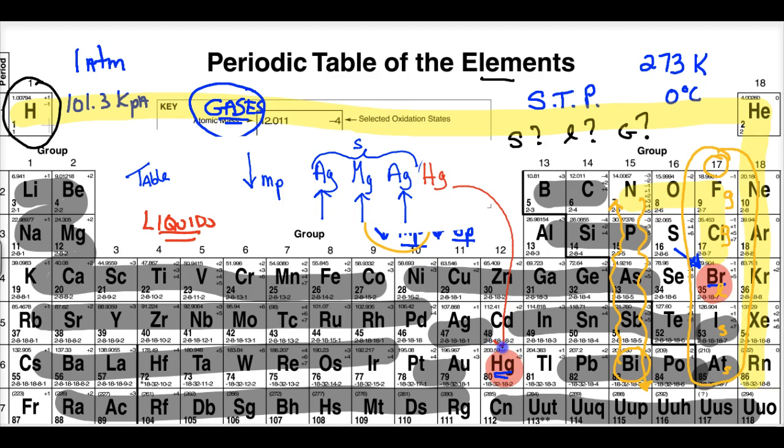It's the liquid that used to always be in thermometers. It's kind of removed from thermometers now because it is toxic. But it's that silvery liquid metal maybe you've seen in the barometer. But in any case, mercury would be your answer because liquids have lower melting points than solids.